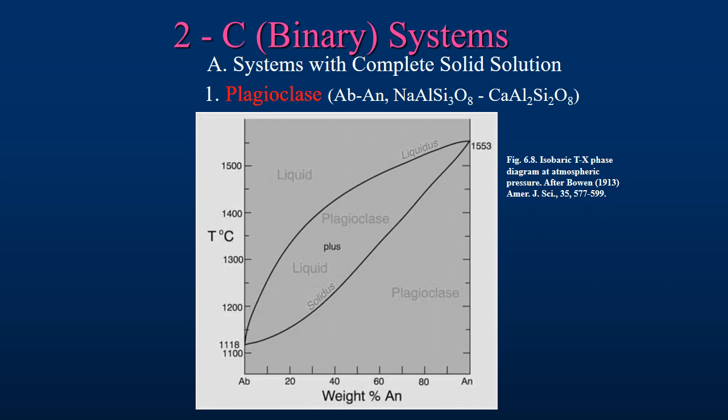At each end of the horizontal axis we have a one component system representing the pure end member of the solid solution series, albite on the left and anorthite on the right. Each of these pure systems behaves like a typical isobaric one component system in that the solid melts at a single fixed temperature at which solid and liquid coexist in equilibrium, just as our water and ice example from last semester. Applying the isobaric phase rule with C = 1 and φ = 2 yields the equation F = 1 - 2 + 1 = 0.